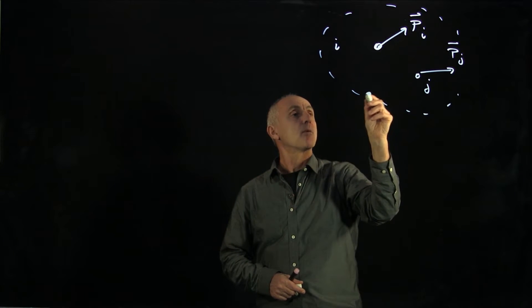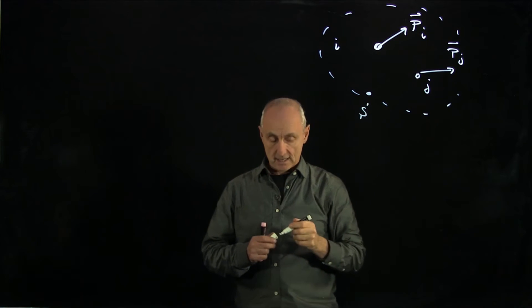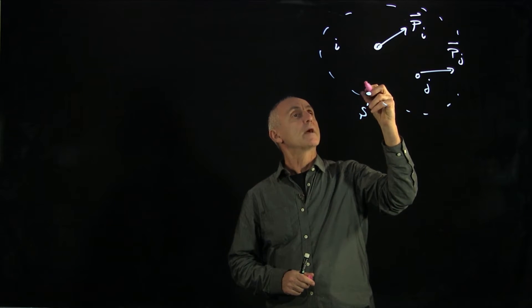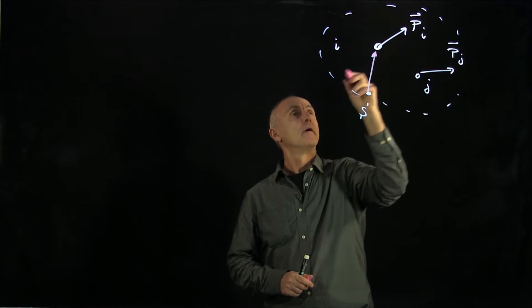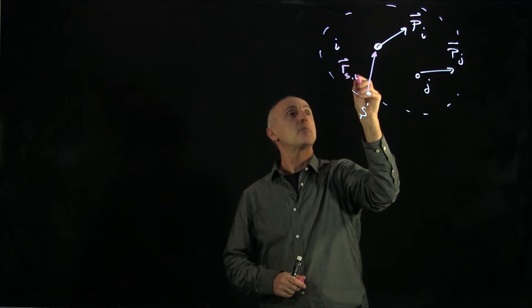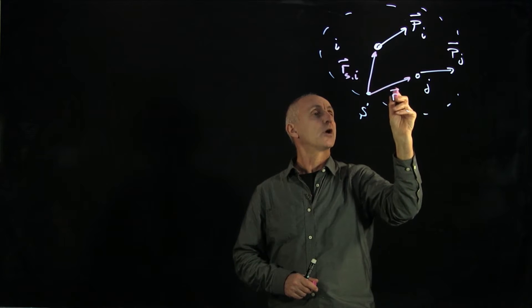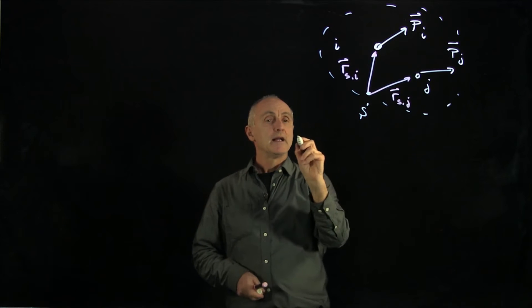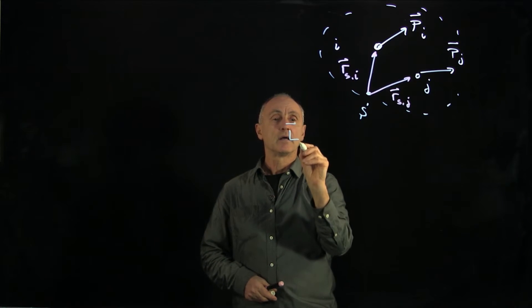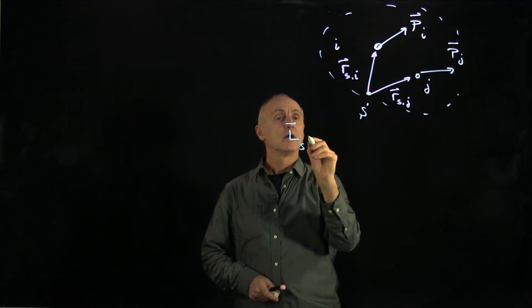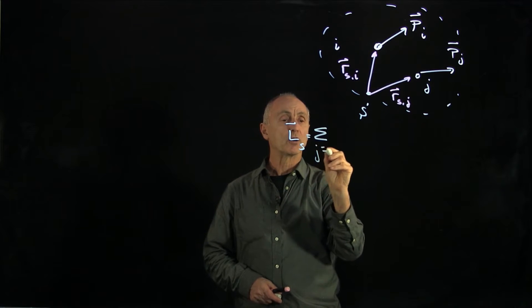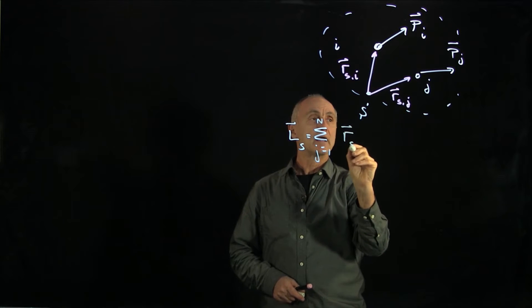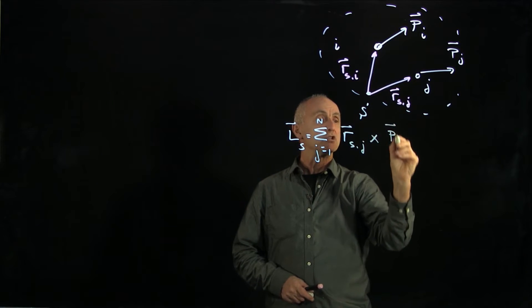And we'd like to calculate the angular momentum about some point s. So that angular momentum will consist of the direct product of the vector from s to the i-th particle and the direct product of the vector rs to the j-th particle. So the angular momentum total will be the sum over all the particles 1 to n of this sum rsj cross pj.